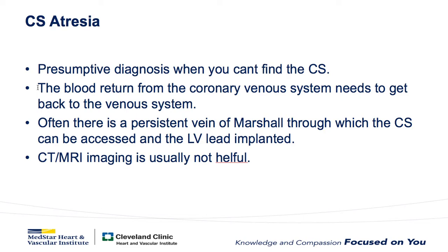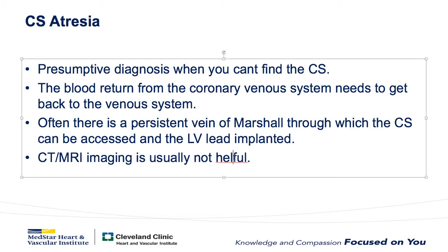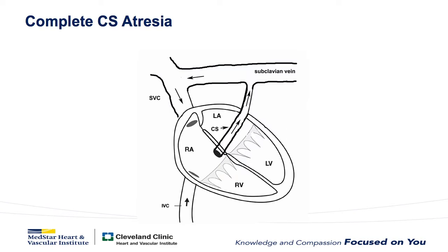If you do have CS atresia, then the blood return from the coronary venous system needs to go somewhere to get back into the venous system. So there is often a persistent vein of Marshall through which the CS can be accessed and the LV lead implanted. If he has complete CS atresia, then all the blood from the coronary arteries that goes to the venous system has to get back some way — it typically goes back up the vein of Marshall into the subclavian and then back into the right atrium.